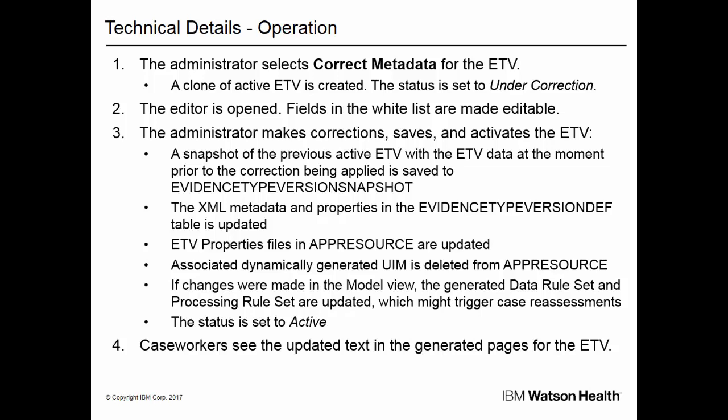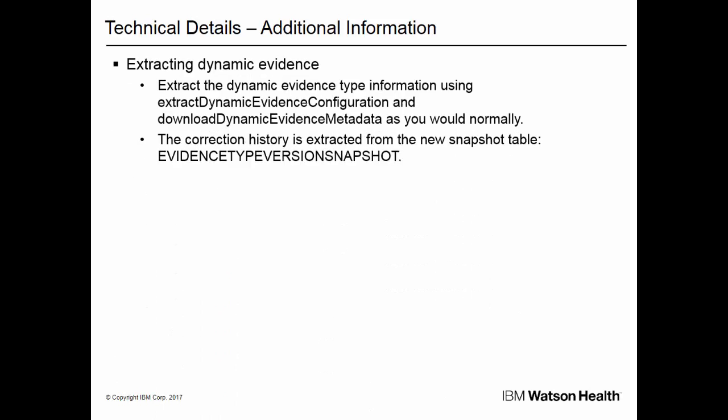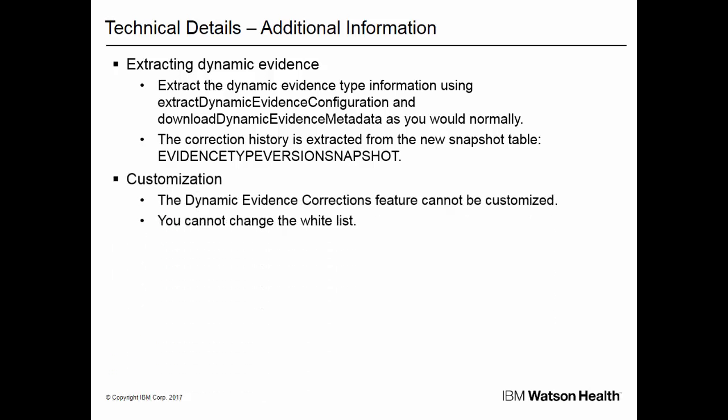Caseworkers see the updated text in the generated pages for the ETV — that is, the page that corresponds to the date of the evidence. You can extract dynamic evidence using Extract Dynamic Evidence Configuration and Download Dynamic Evidence Metadata as you would normally. The Dynamic Evidence Configuration Extractor now also extracts the content of the Evidence Type Version Snapshot table. The Dynamic Evidence Corrections feature cannot be customized. In addition, you cannot change the whitelist.